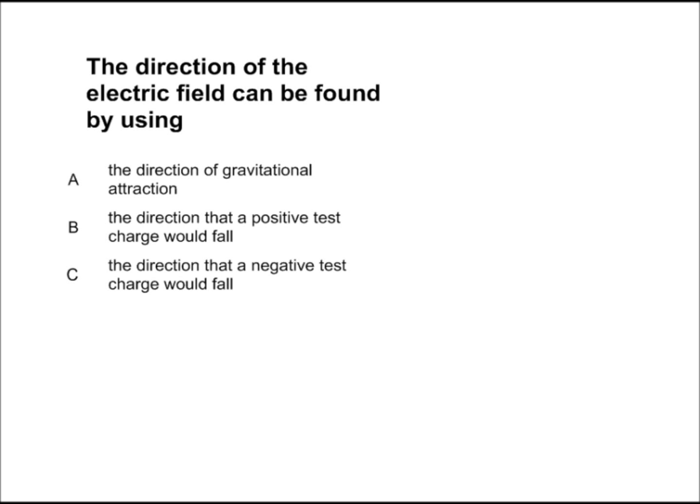In order to find the direction of an electric field, we use a test charge. A test charge will allow us to find the direction by judging which direction it goes. This test charge has a specific charge — that charge is positive.